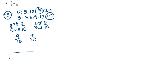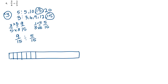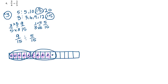I'm going to draw nine-fifteenths and shade in nine of them. Then I need to separate them into groups of five. There's one group of five-fifteenths, and a second group of five-fifteenths. We have one full group and four shaded out of five remaining, so this is equal to one and four-fifths.